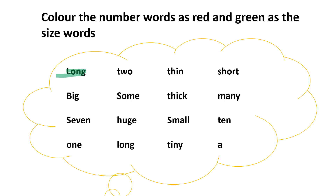The second word is '2,' which is a number word, so we color it red. The third is 'thin' — a size word, colored green. 'Short' is also a size word, colored green. 'Big' is also a size word. 'Some' is a number word, so we color it red. 'Thick' is a size word, so we color it green.